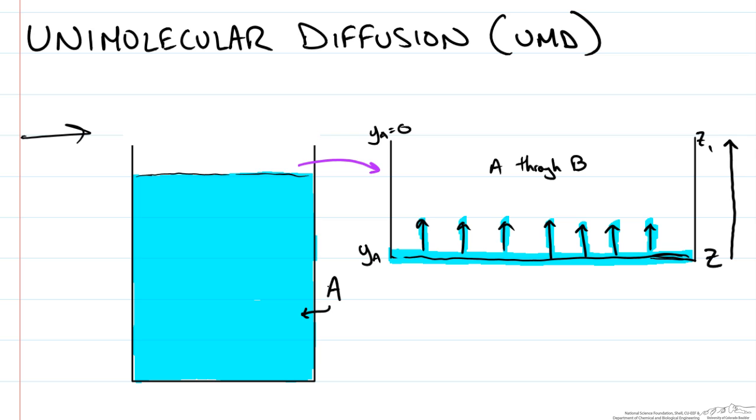We're going to start again with our flux equation for one-dimensional mass transfer based on a fixed coordinate system for a binary system of A and B that we saw in our previous screencasts. The flux of A in the Z direction was equal to negative the concentration of our system times the diffusivity times our gradient, in this case in terms of mole fractions in the Z direction, and then we include the term for our bulk flow mass transfer.